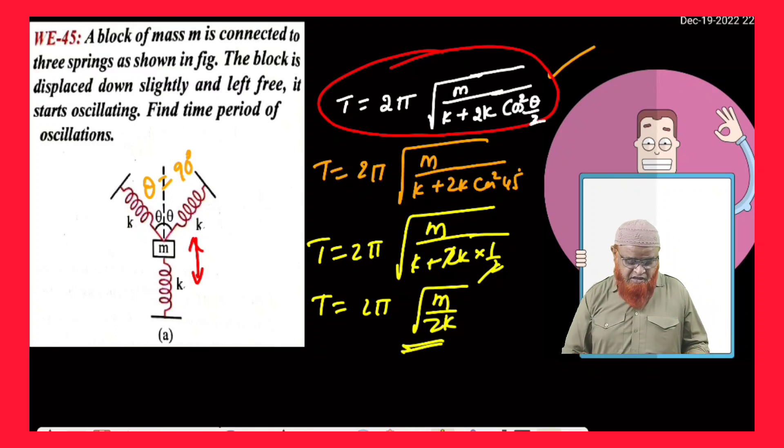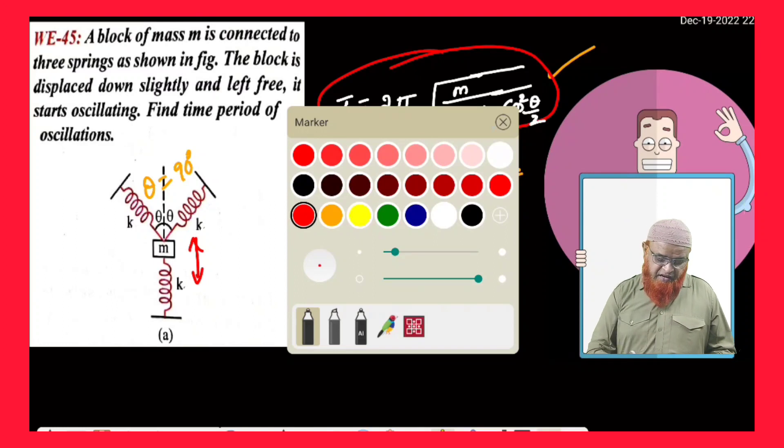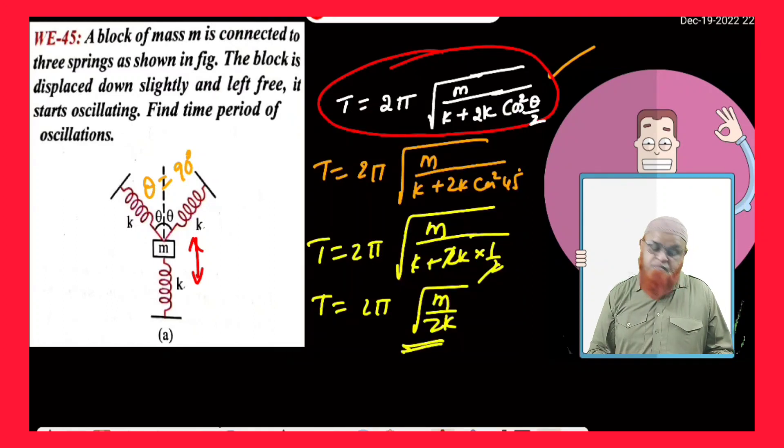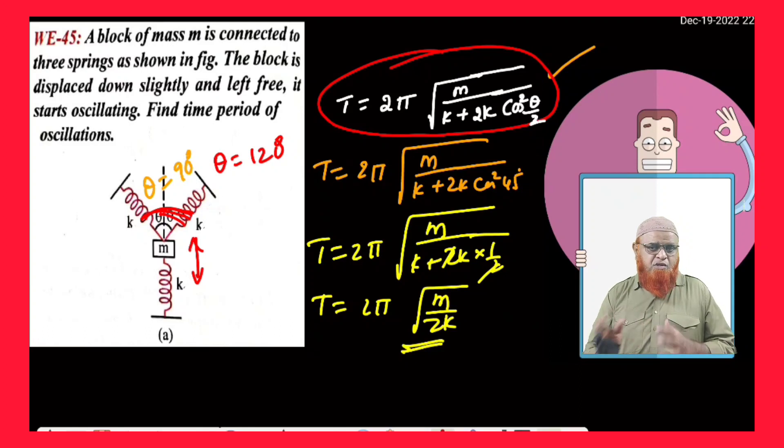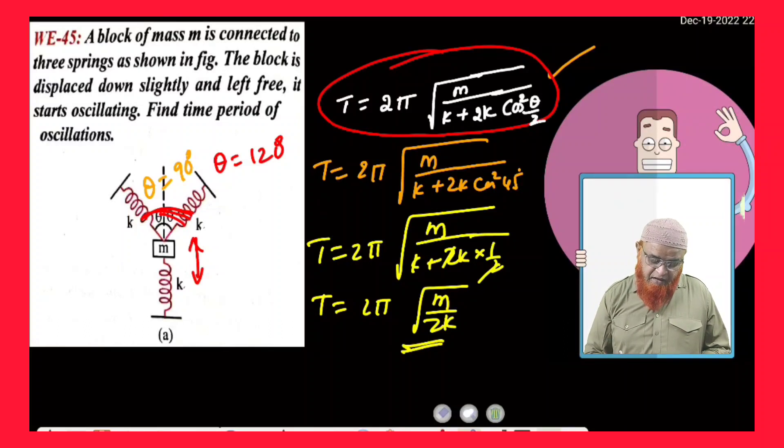Let me tell you one more case here. Instead of considering 90 degrees, you can also consider 120 degrees. If this angle between the two springs is 120 degrees, then you can solve this as a different problem. Instead of taking 90, if you consider 120, you will be getting instead of 45... let me erase this 45 and show you what I am going to get now.